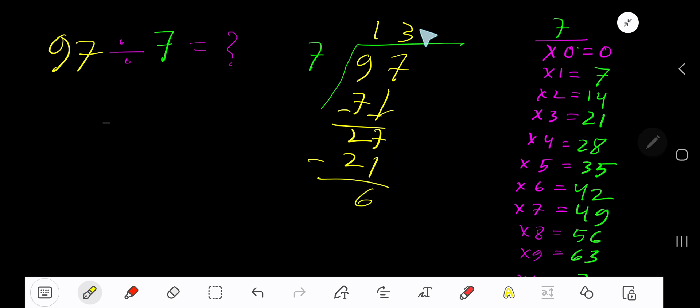So our answer is 13 remainder 6. If you want to write your answer in decimal form, then take your decimal and add number of zeros.